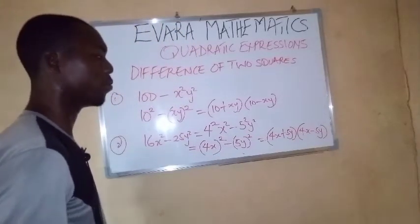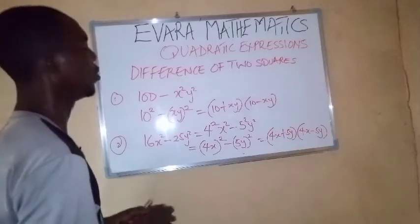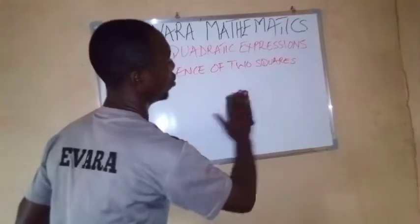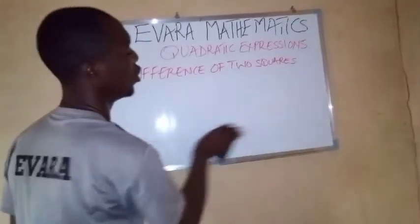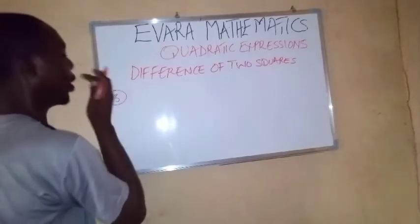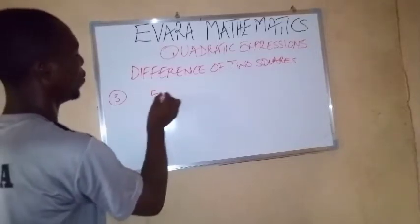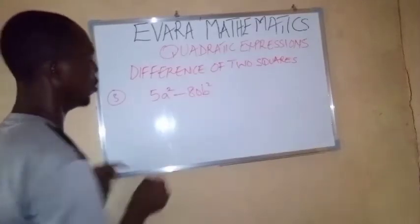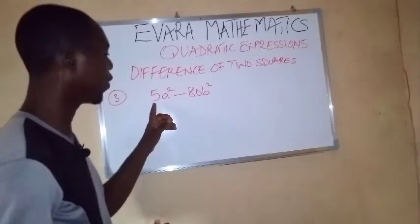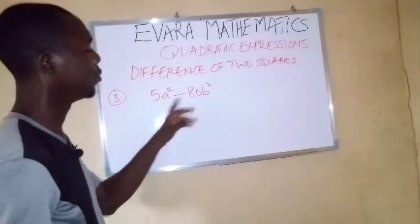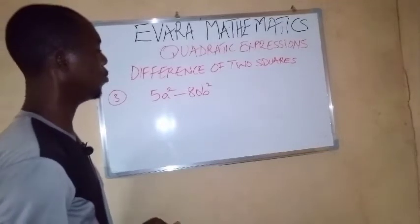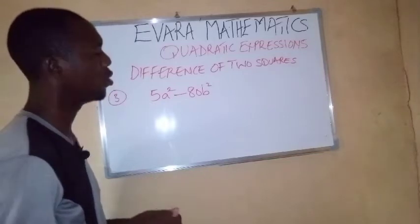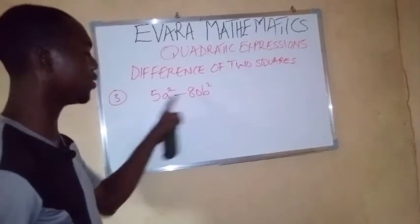At times you are giving some figures that are not perfect squares. How are you going to treat such figures when you have a figure which is not a perfect square? Let's take something like this. 5a squared minus 80b squared. 5 is not a perfect square. 80 is not a perfect square. But if we divide 80 by 5, that is if we factorize 5 out, we will discover that if we divide 80 by 5, you get 16.